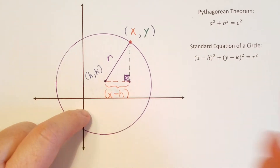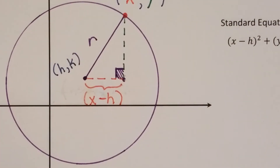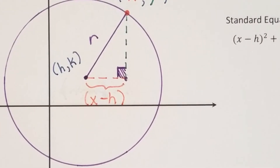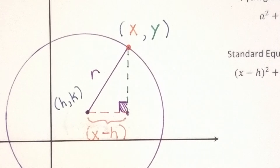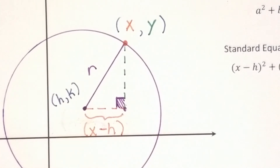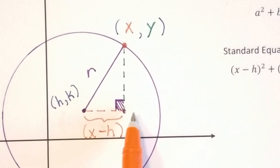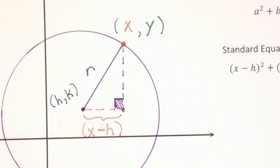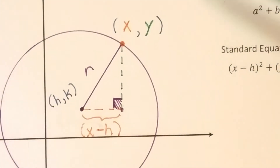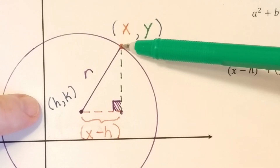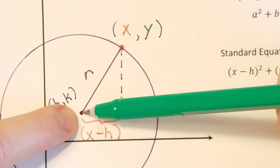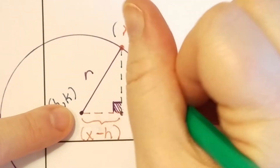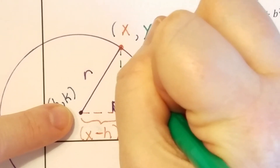Of course, if there were squares here I could just count the number of squares, but I don't have squares — just these arbitrary values. So x minus h equals this horizontal distance. And up here, the y coordinate is y. At the center, the y coordinate is k. So this is y minus k units in length.